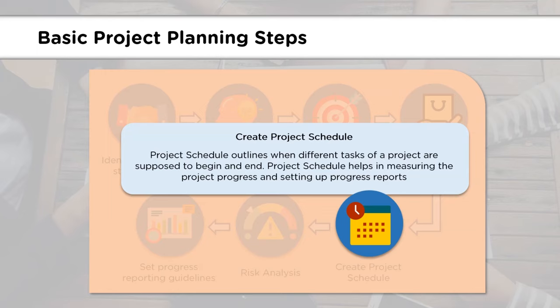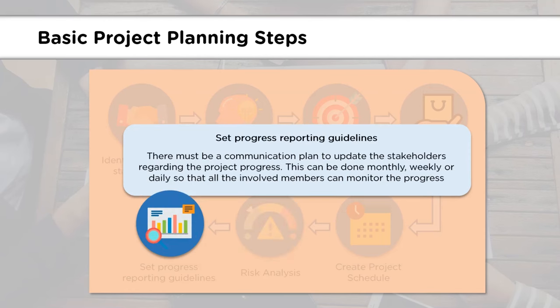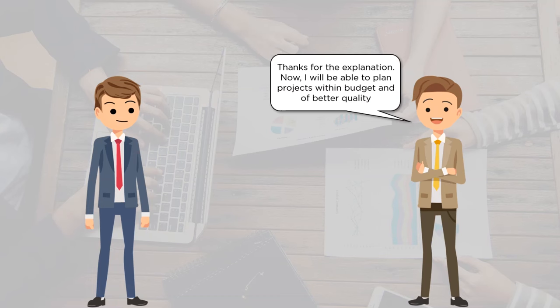Then comes creating a project schedule, which refers to guidelines on when a particular task is to be started and when it is supposed to end. This helps in monitoring the growth of the project and generating progress reports. The next step is risk analysis, which plays an extremely important role in the success of the overall project. It helps in identifying risks, prioritizing them, and taking steps to limit them. The last step is generating progress reports, where stakeholders are updated about the project growth so all concerned team members can review the progress.